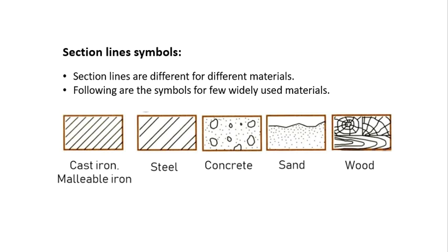For cast iron, the section lines have large equal spacing. In concrete, it is shown differently. And there are also symbols for sand and wood.